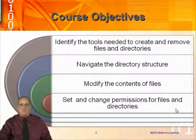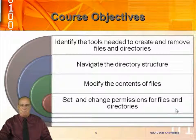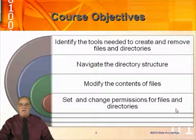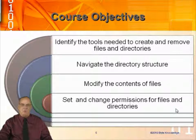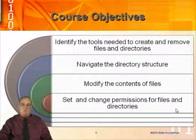Permissions are very high on the list of things to know about Unix — how to set and change the permissions for files and directories. And how do I get out of trouble? We spend a lot of time on that. What if the book says don't do this, and I did it anyway?